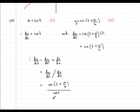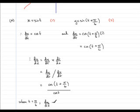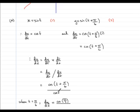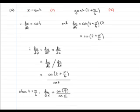Now we're looking at the equation of the tangent, so we need the gradient at the point where t equals pi upon six. Substituting in: the numerator becomes cos of pi upon six plus pi upon six, which is cos of two pi upon six, or cos of pi upon three. The denominator is cos of pi upon six.